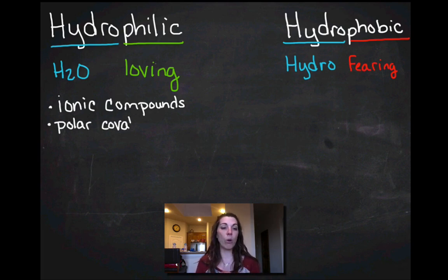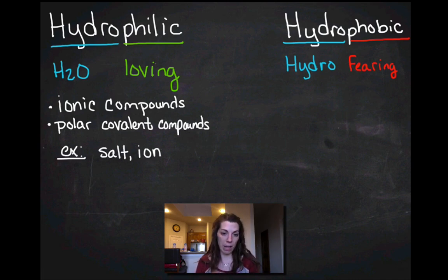Another one are going to be polar covalent compounds. Water itself is a polar covalent compound and other polar covalent compounds dissolve in water. Ethanol will dissolve in water. So salt and ions are the easiest ones to think about. Ions are going to play a huge role when we're talking about biological processes and metabolism.